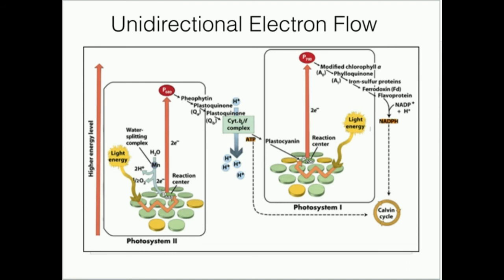That ATP is going to go to what we call the Calvin cycle, which is part of the light-independent reactions. Photosystems I and II are light-dependent reactions. Now we're going to get into a discussion of photosystem I, and we'll find it's basically identical in function — or at least very similar — to the function of photosystem II.